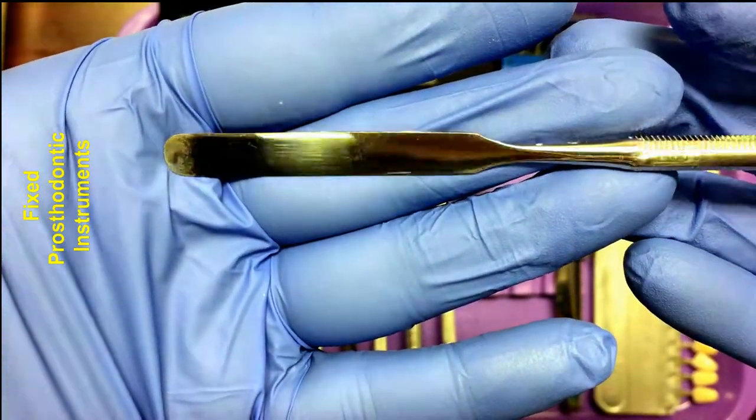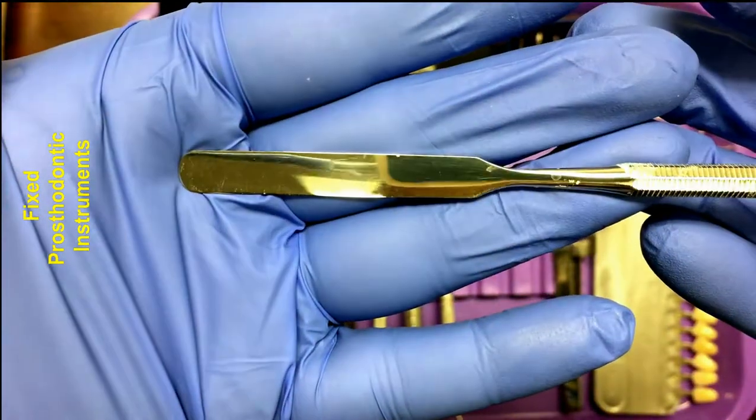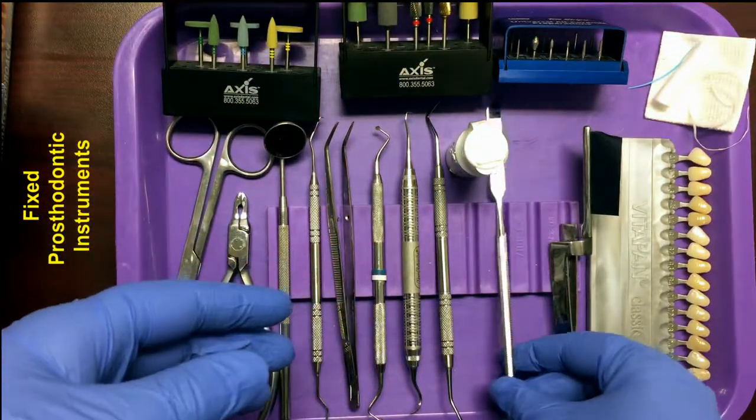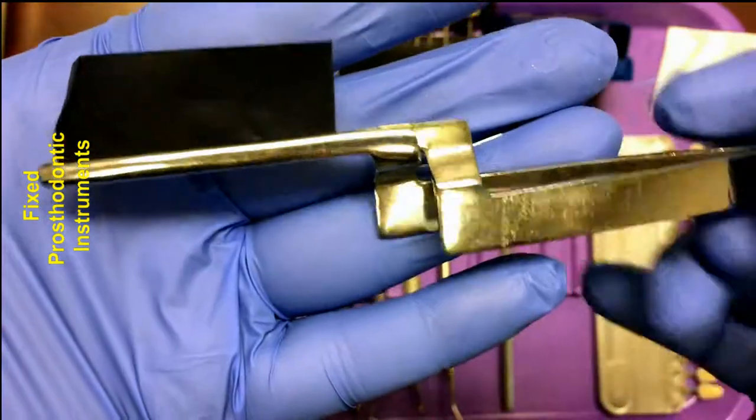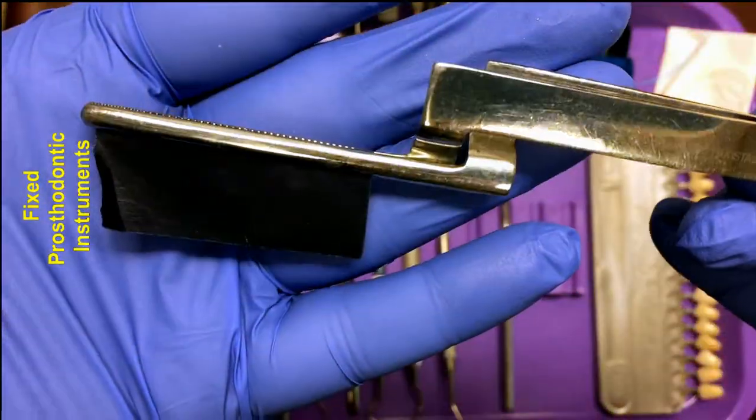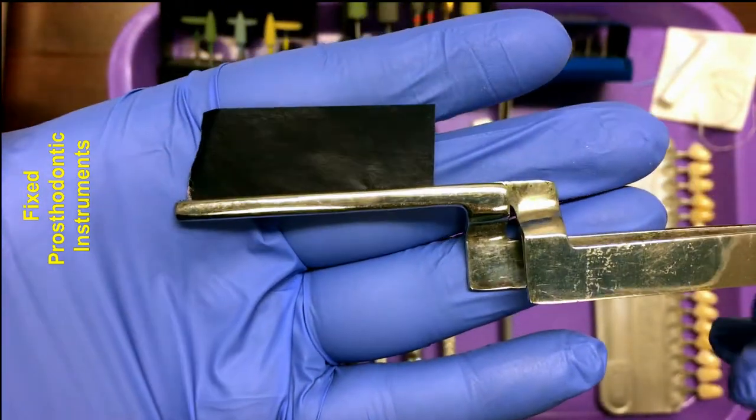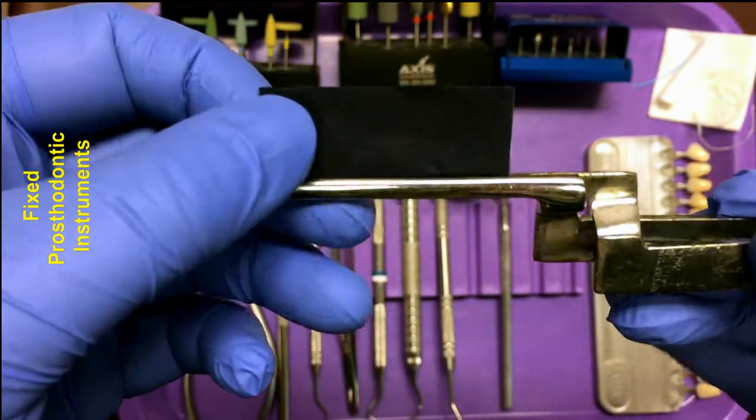And then we have an articulating paper holder along with the articulating paper. This item used together is used to check the bite of the patient to make sure that the restoration meets their occlusion and is not high. If it's high, the doctor will adjust the restoration so their bite feels normal.